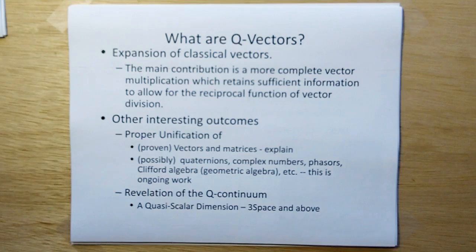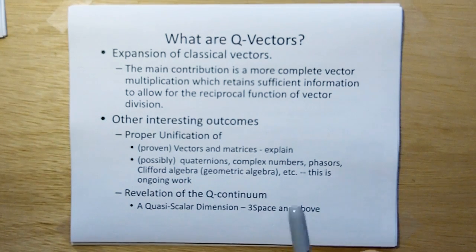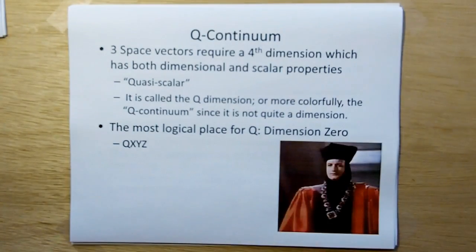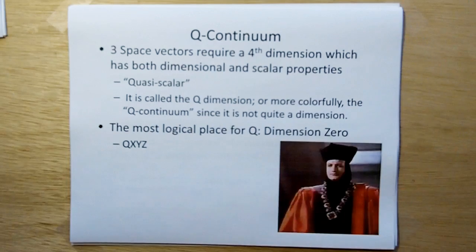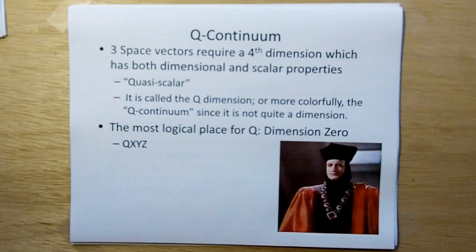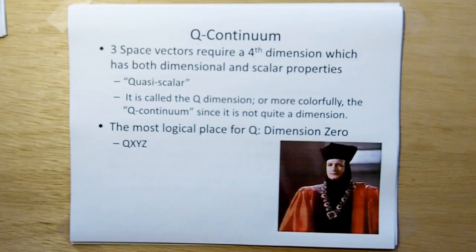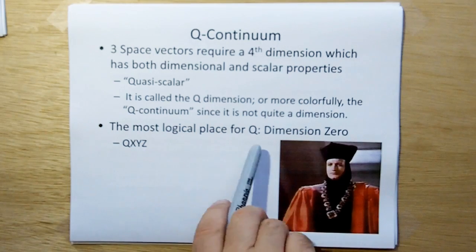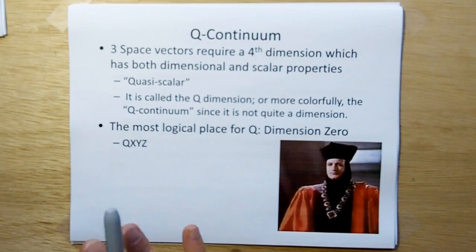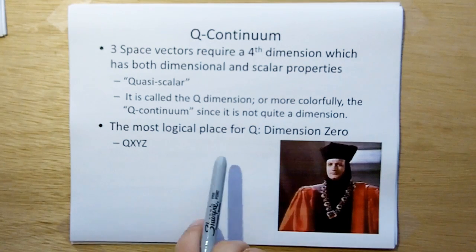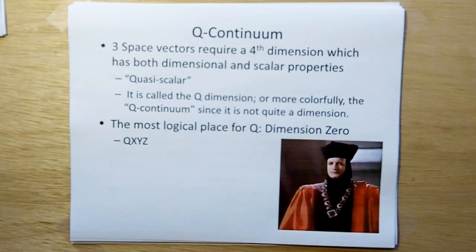And there's also the revelation of a Q continuum, which is really a quasi-scalar dimension that's needed for three-space and above. You won't see it in the two-space derivations. The Q continuum is a fourth dimension which allows three-space vectors to work properly. It has both dimensional and scalar properties, and that's why I'm calling it quasi-scalar. I named it, because it starts with a Q, I kind of named it after the Star Trek character Q, played by John de Lancie. The most logical place for Q is the zero dimension, the very first dimension.